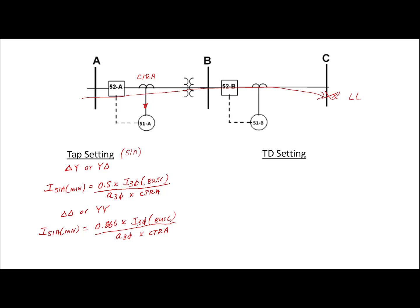For the tap setting, it is based on the maximum common fault current. I_51A_max = I_3φ(bus B) / (a_3φ × CT_ratio_A). Notice that because it's a three-phase bolted fault there's no correction factor to take into consideration. Again, for Delta-Y or Y-Delta the factor is 0.5, and for Delta-Delta or YY the factor is 0.866, but these only apply to line-to-line faults.